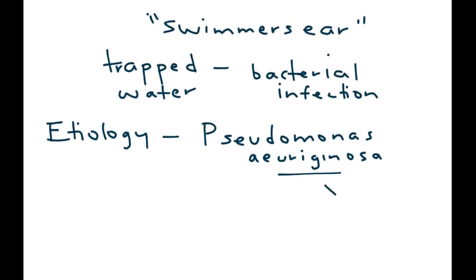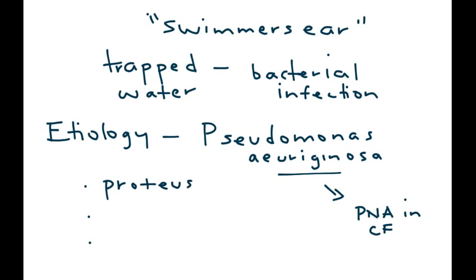Pseudomonas is a very important bug frequently tested on exams. It causes pneumonia, particularly in cystic fibrosis patients, among many other conditions. Other organisms that can cause acute otitis externa include Proteus, Staphylococcus aureus, and E. coli.